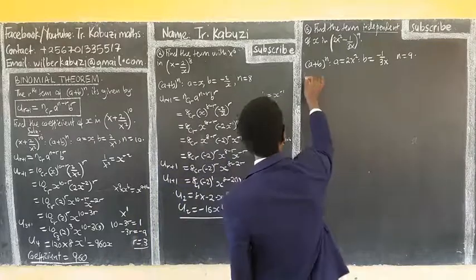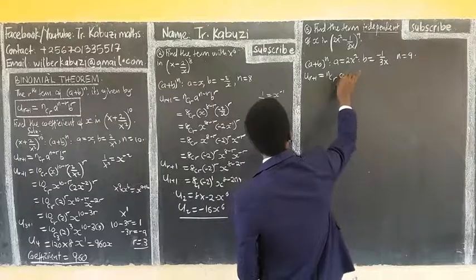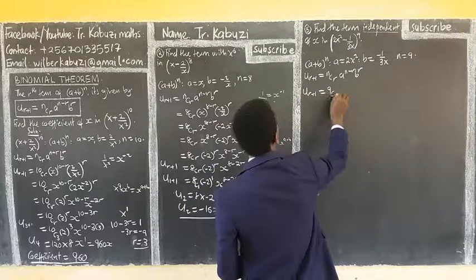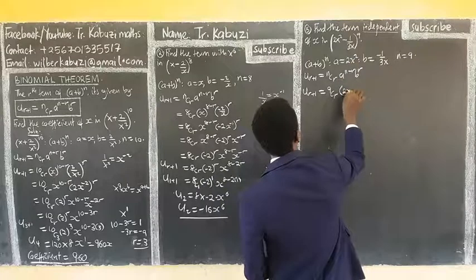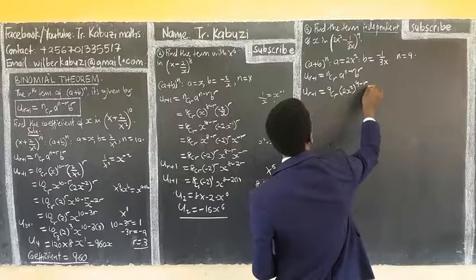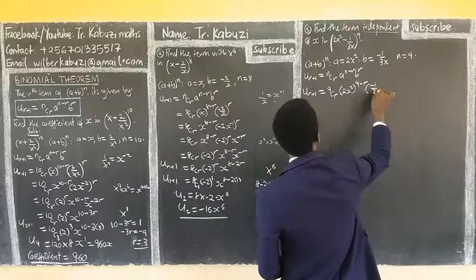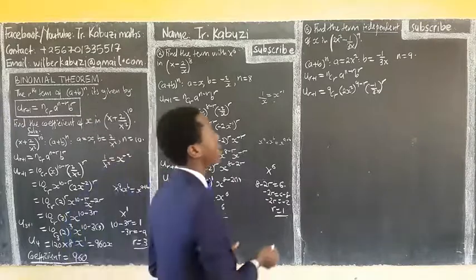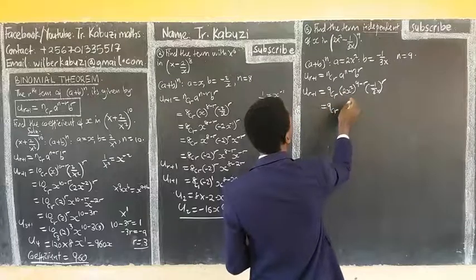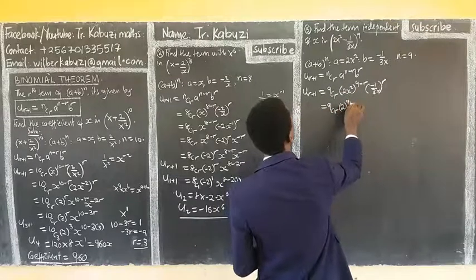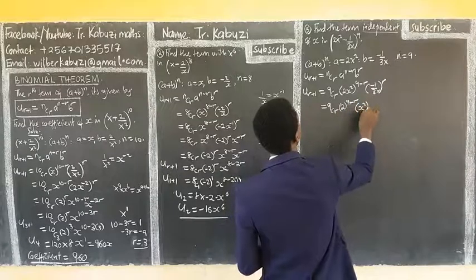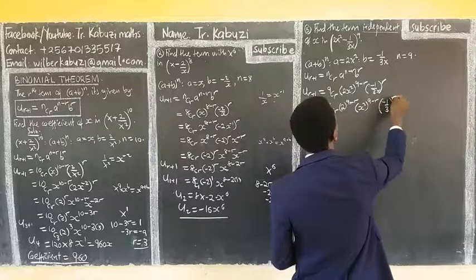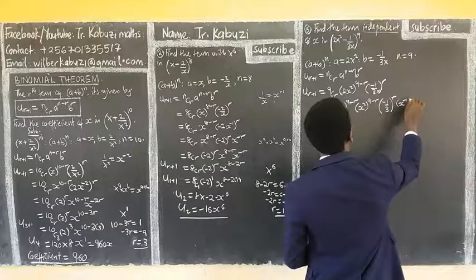Substituting into the formula U(r+1) = C(9,r) · (2x²)^(9-r) · (-1/3x)^r, we simplify: C(9,r) · 2^(9-r) · x^(2(9-r)) · (-1)^r · (1/3)^r · x^(-r). The overall power of x becomes x^(18-2r) · x^(-r) = x^(18-3r).